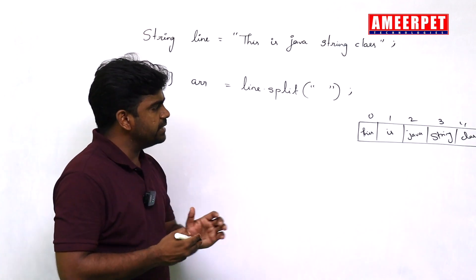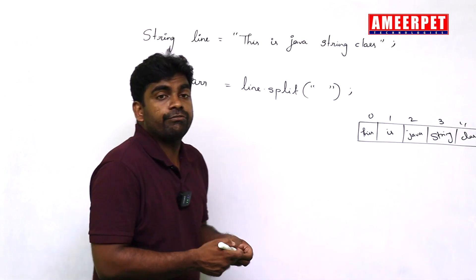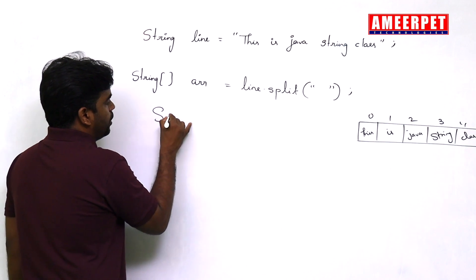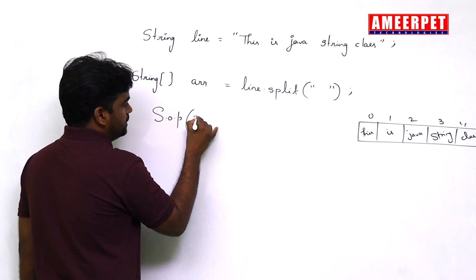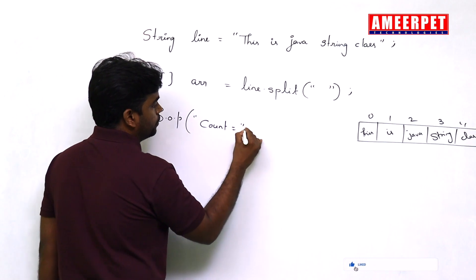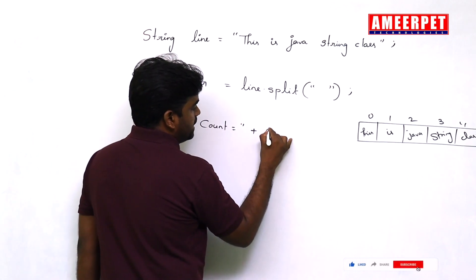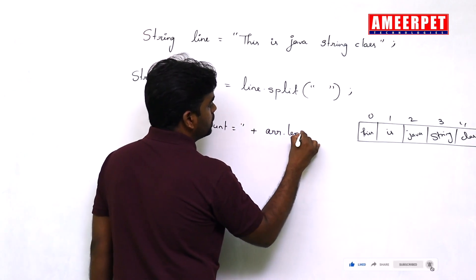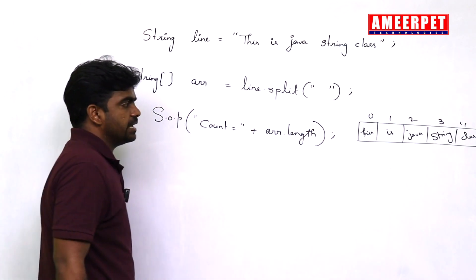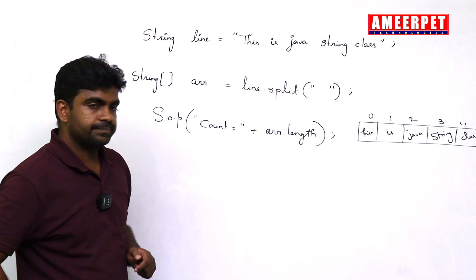I just want to count how many words are present in the given string. Five words are present. How can you find out? System dot out dot println — word count equals arr dot length. Because five words are present, it will give you five.